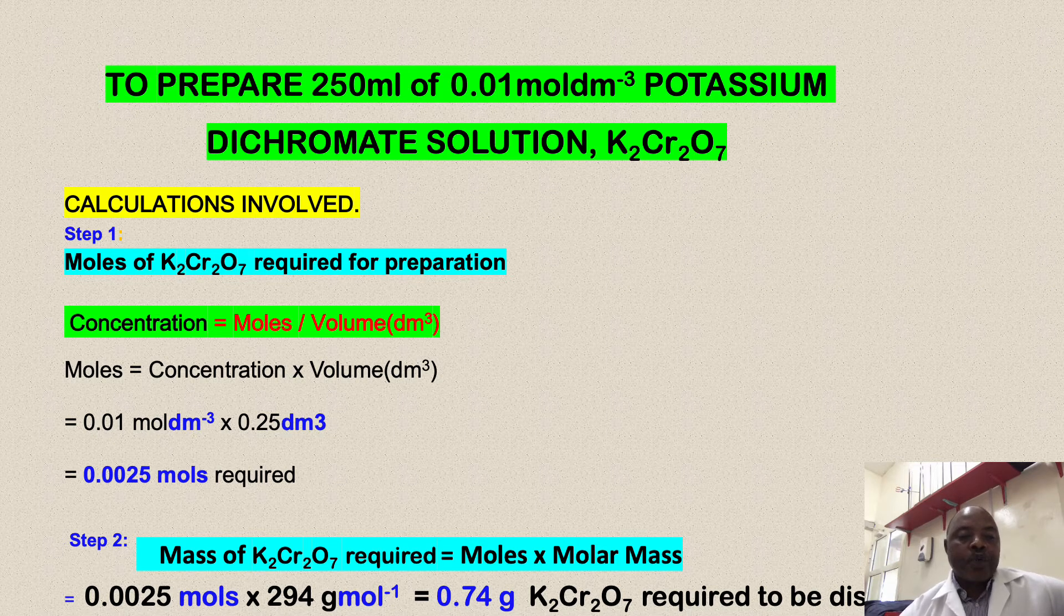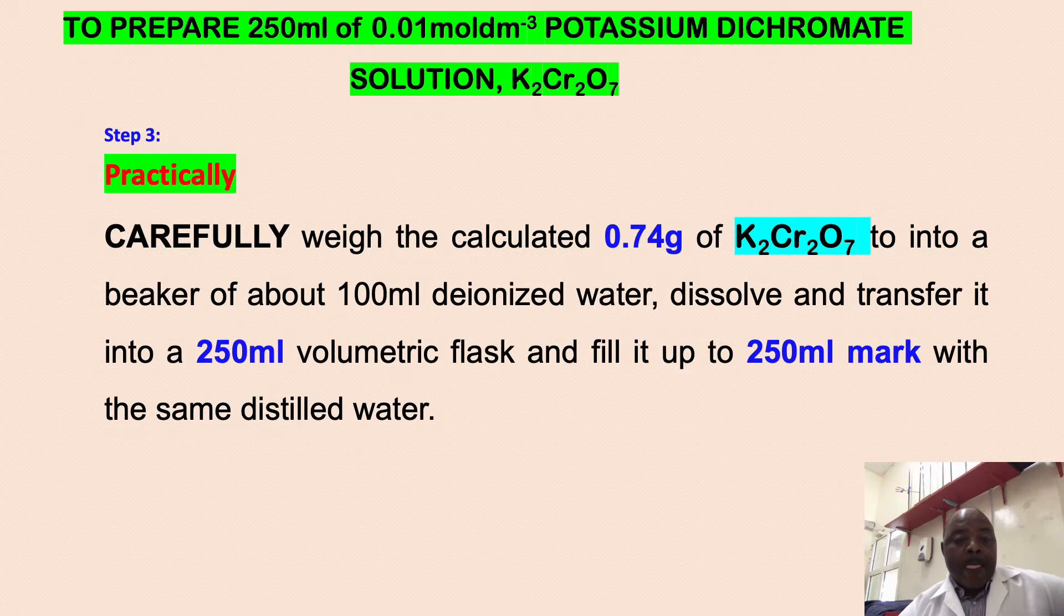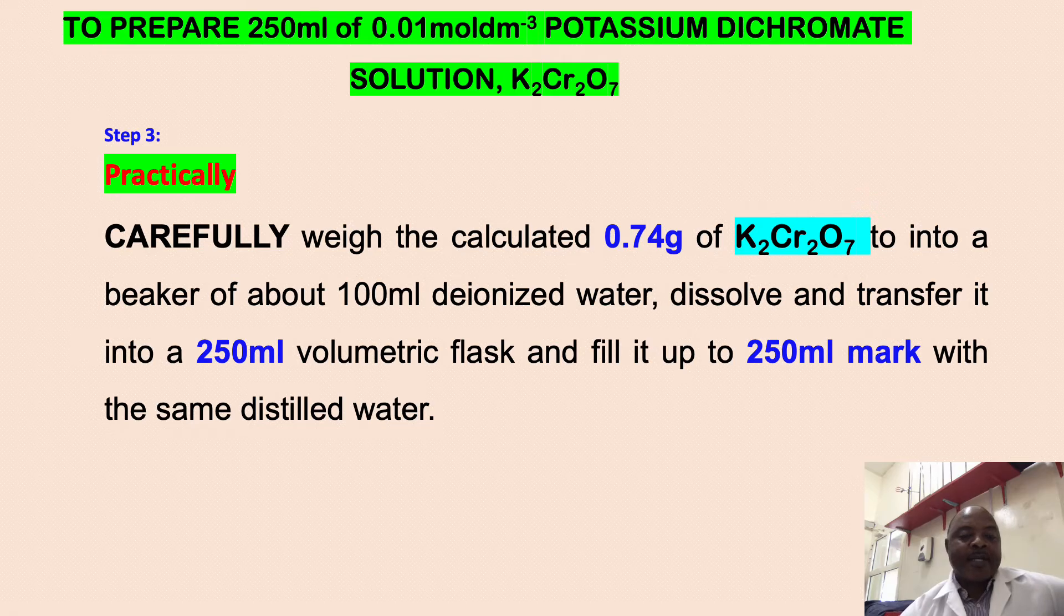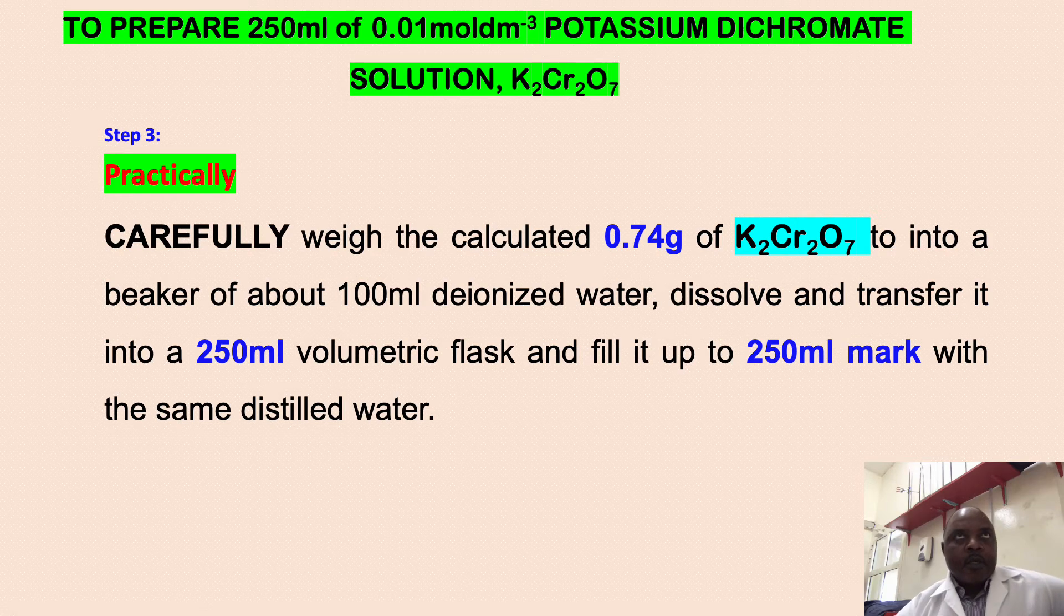That takes us to step number three, the practical part. In this section in the laboratory, you will need a 250 ml volumetric flask, a spatula, a glass beaker, deionized water or distilled water, filter paper, and a balance.